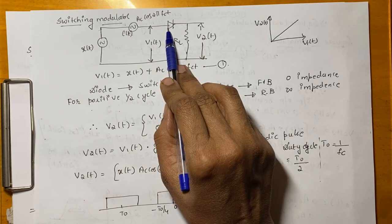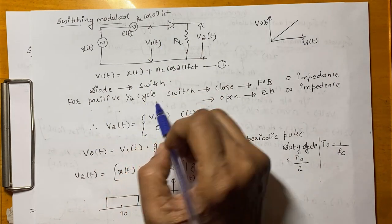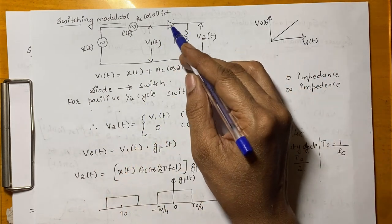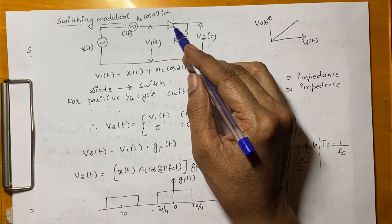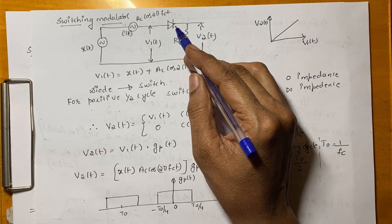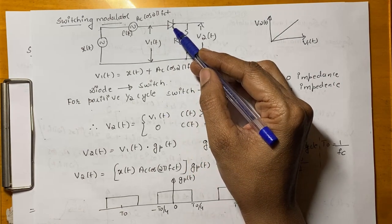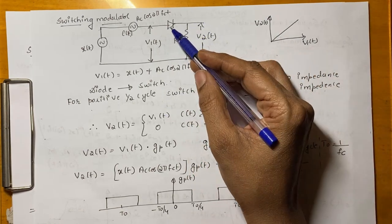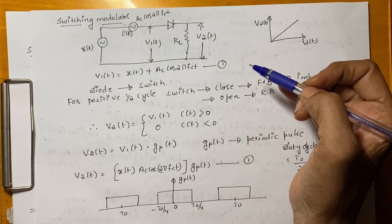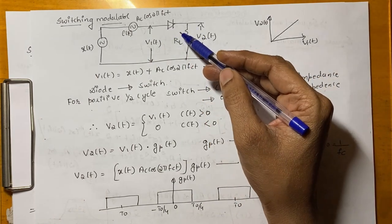This diode is acting as a switch that is for positive half cycle. The switch will be closed which means that it is forward biased which offers zero impedance. For the next cycle, this switch will be open which means that this diode is reversed biased and which offers infinite impedance.